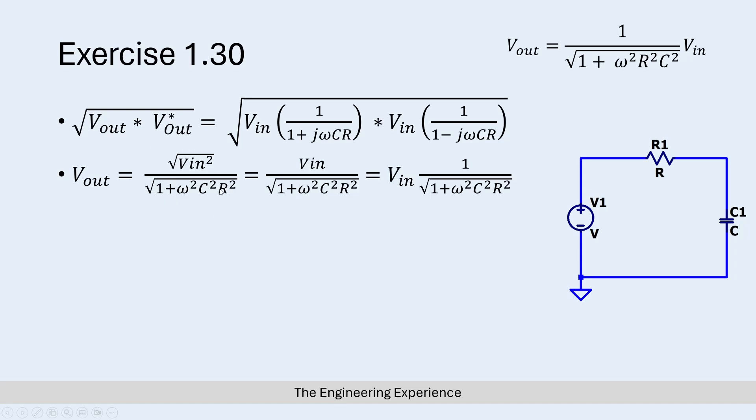Simplifying the square root a little bit, we can basically do the square root of the top divided by the square root of the bottom, which would be the same equation. Over here on this section we can cancel out the square with the square root so we end up with just V_in.